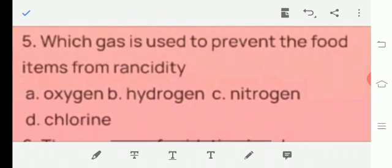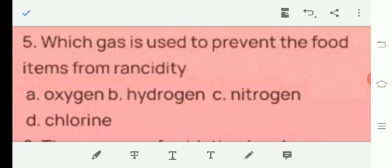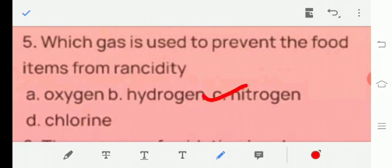Let's move to question number 5, which gas is used to prevent the food item from rancidity? A. Oxygen, B. Hydrogen, C. Nitrogen, D. Chlorine. The answer is C. Nitrogen.